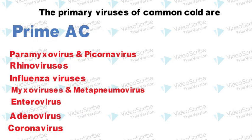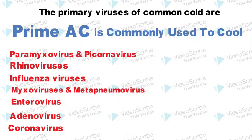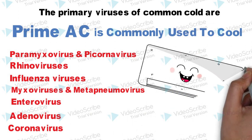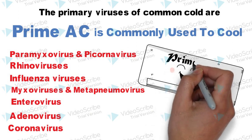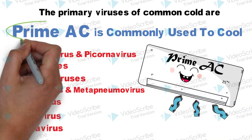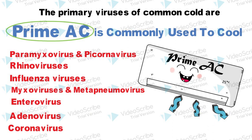The trick to remember the viruses is: 'Prime AC is commonly used to cool.' Here you need to consider the name of air conditioner as Prime AC, and the letters in Prime AC represent the viruses of common cold.